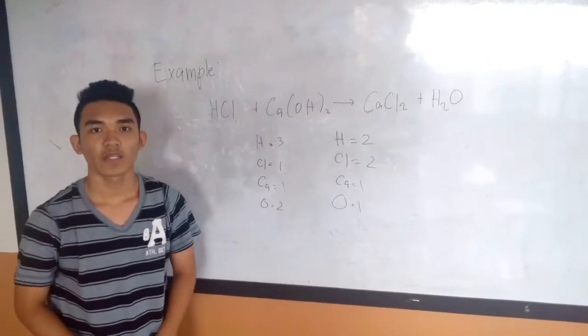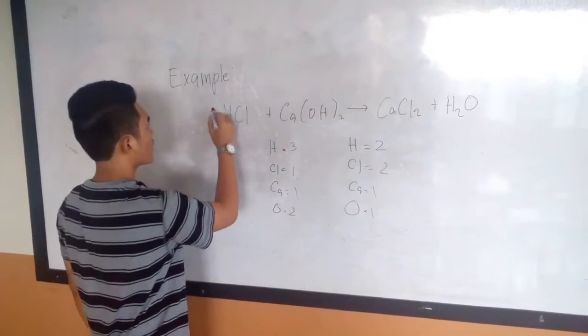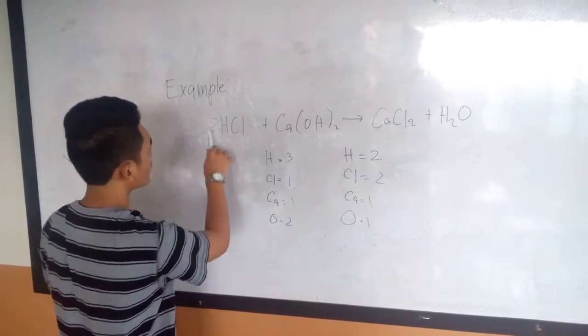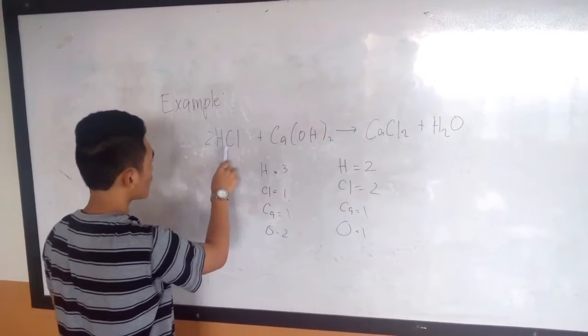Then, in order to balance the equation, you must first put 2 here. So that this hydrogen is multiplied by 1. It's 2.